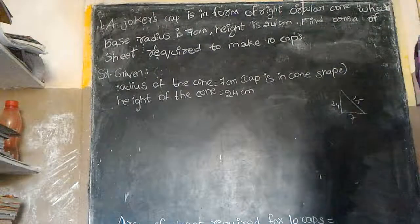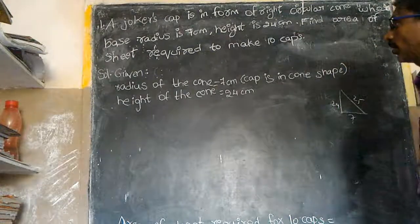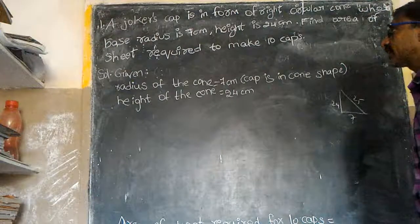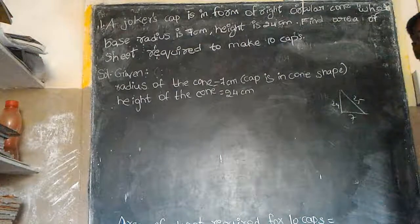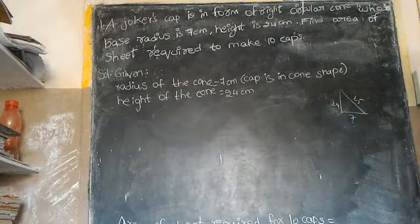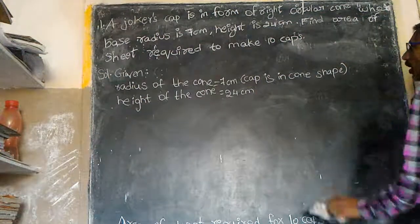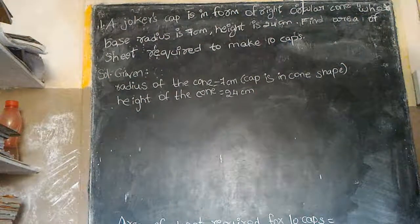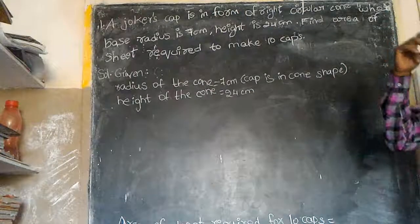A joker cap in the form of a right circular cone, whose radius is 7 cm and height is 24 cm. Let us find the area of the sheet required to make 10 caps.